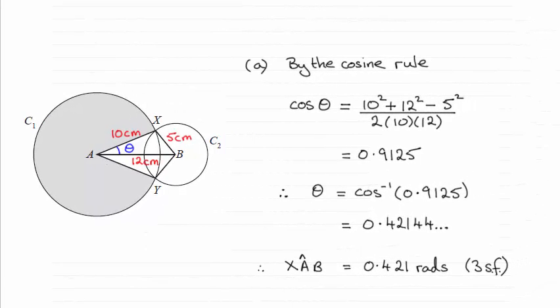Hi there. The answer to part A was that the angle XAB equals 0.421 radians to three significant figures.